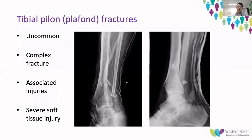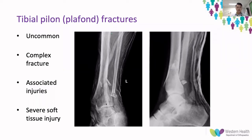Tibial pylon fractures, also known as pilon fractures, are relatively uncommon fractures. They account for about five to seven percent of tibia fractures and less than one percent of all lower limb injuries. However, they are extremely complex due to the sheer comminution and varying fracture patterns depending on foot position at the time of injury. These are often secondary to an axial injury where the talus rams into the tibial plafond, developing an extremely comminuted fracture pattern with significant articular injury and metaphyseal shear.